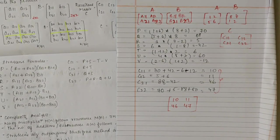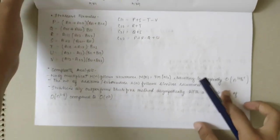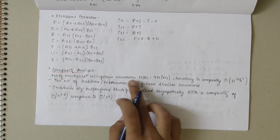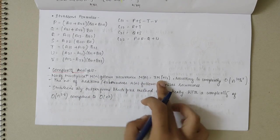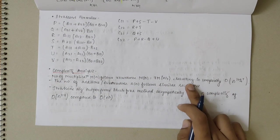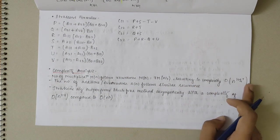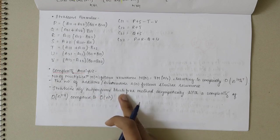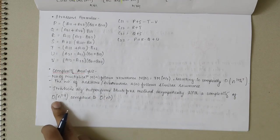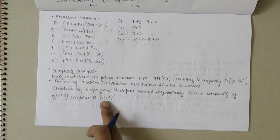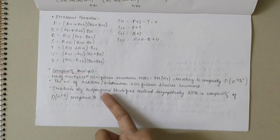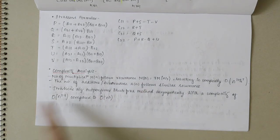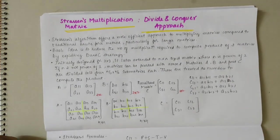This was Strassen's matrix multiplication example. Now for the complexity analysis: the number of multiplications M(N) follows the recurrence M(N) = 7×M(N/2), resulting in a complexity of O(N^log2(7)), which is approximately O(N^2.8). This is compared to O(N^3) for the normal matrix multiplication method. So Strassen's algorithm outperforms the brute force method asymptotically.